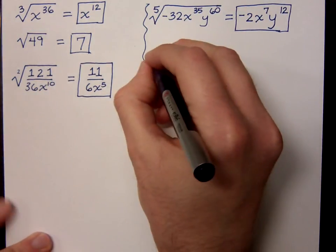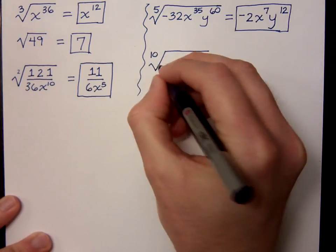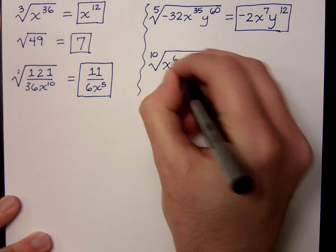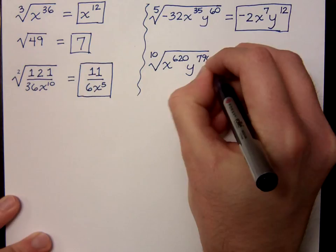Let's do another one just because we want to make these problems happy and we want to feel good. If I have the 10th root of x to the 620th, y to the 790th power.